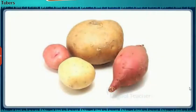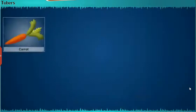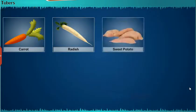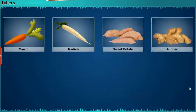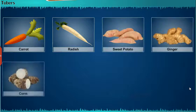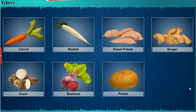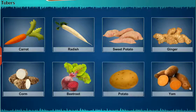Tubers are also there in vegetables. We should eat them too. Carrot, Radish, Sweet potato, Ginger, Corn, Beetroot, Potato, Yam.